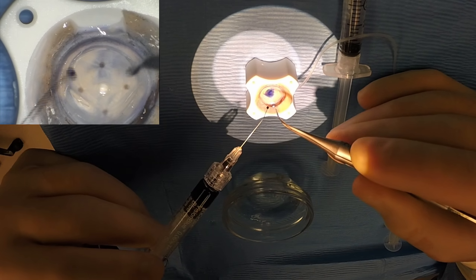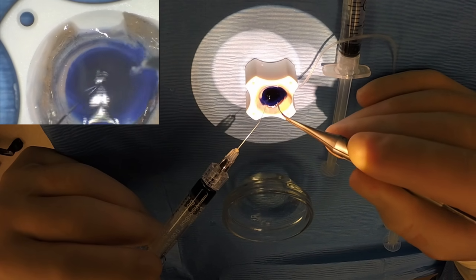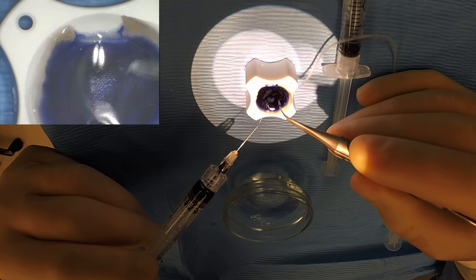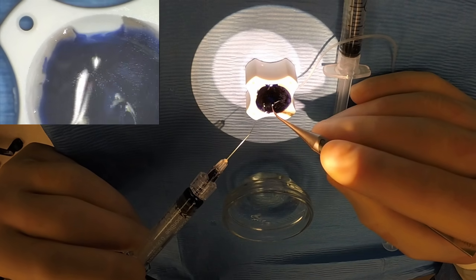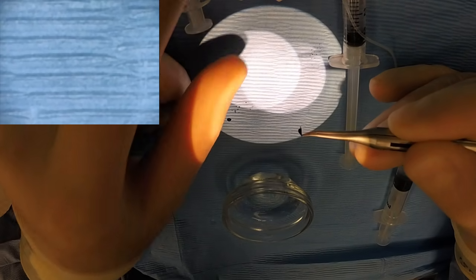And then I fill the well there, the corneal scleral rim, with tri-pan and then dunk the graft and soak it for about 20 to 30 seconds.